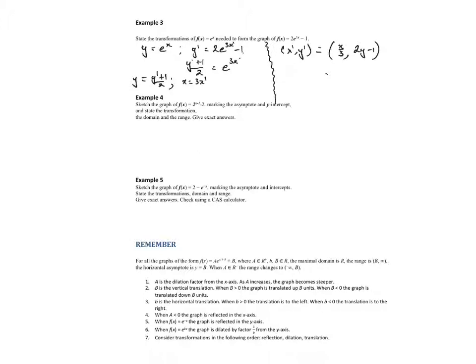The x value is being multiplied by a factor of a third, which means it's dilated by a factor of one third from the y-axis. 2 times y: dilated by a factor of 2 from the x-axis. And then translated one unit negative x direction.